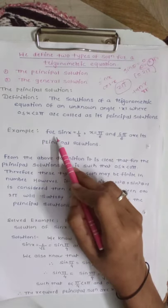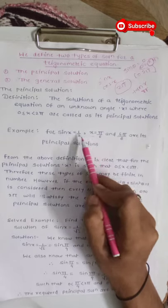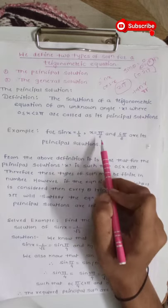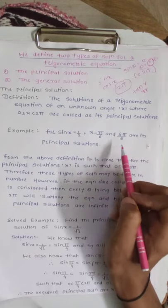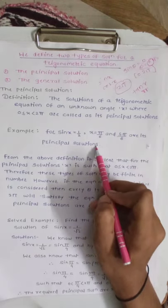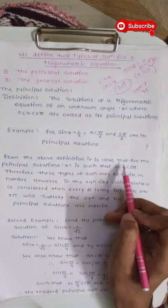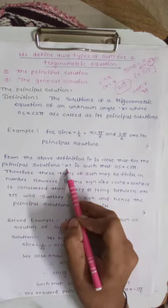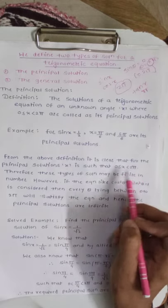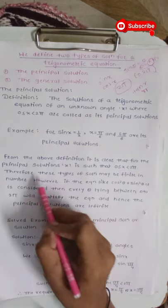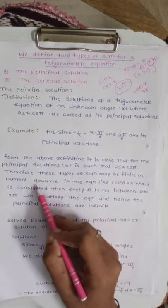For example, for sin x is equal to 1 by 2, x is equal to pi by 6 and 5 pi by 6 are its principal solutions. From the above definition, it is clear that for a principal solution, x satisfies 0 is less than or equal to x is less than 2 pi. Therefore, these types of solutions may be finite in number.